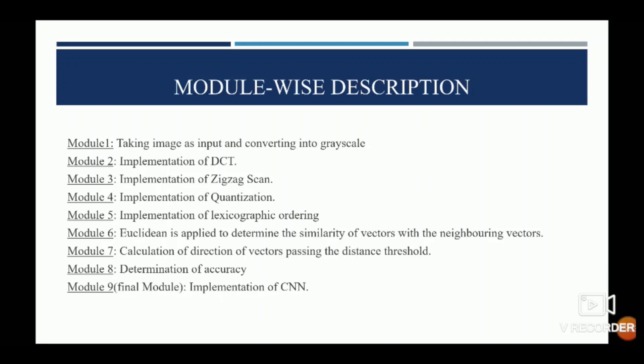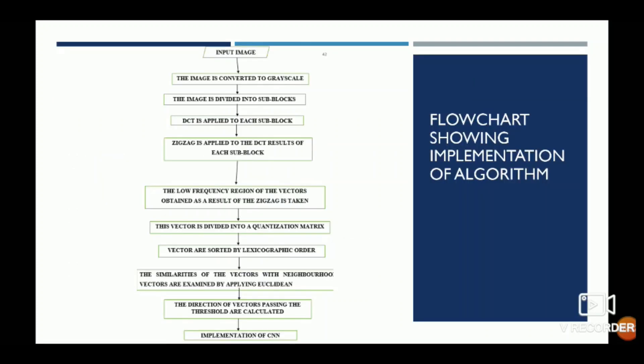The higher energy coefficients appear first, followed by the lower coefficients. Module 4 is quantization — converting a continuous range of values into a finite range. Module 5 is lexicographic ordering, organizing data in a sequential way. Then Euclidean distance is applied to determine similarity of vectors. Module 7 is calculation of direction of vectors, Module 8 is determination of accuracy, and Module 9 is implementation of CNN. This is the complete flowchart showing implementation of the algorithm.